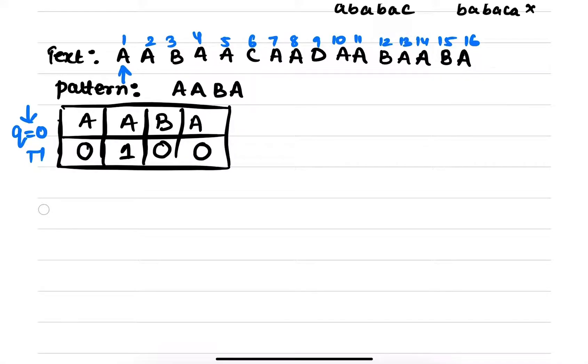What we do? We compare T of I with P of Q plus 1. Is this A matching with this A? Yes, it's matching. So I will increment my Q and I will increment my I as well. Is this B matching with this B? Yes, it's matching. Then what I will do? I will just increment this Q and I will increment this I. Is this A matching with this A? Yes, it's matching. Therefore increment Q and increment I.